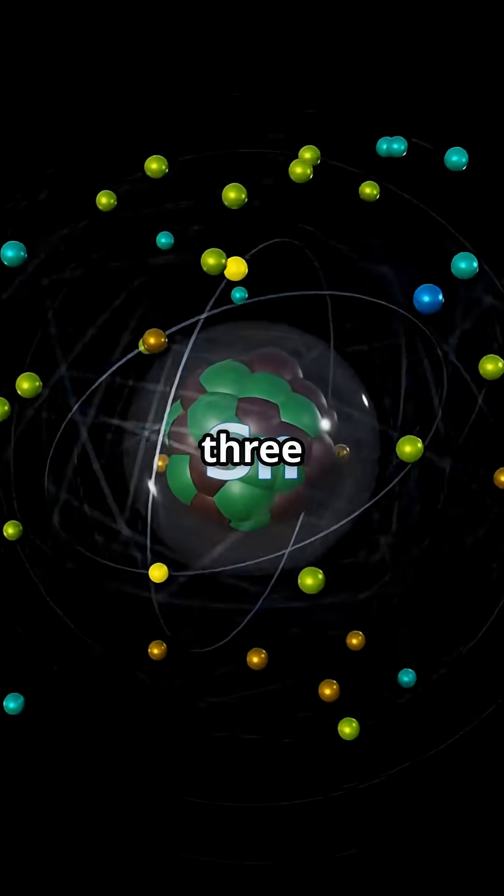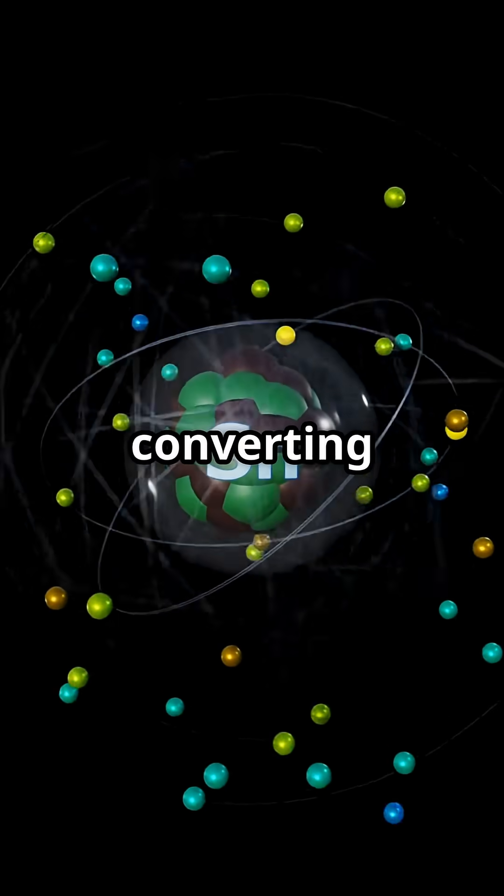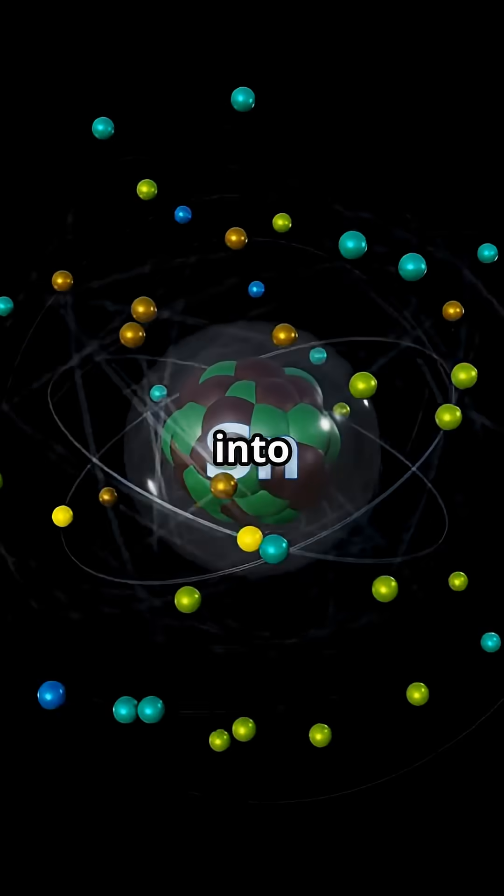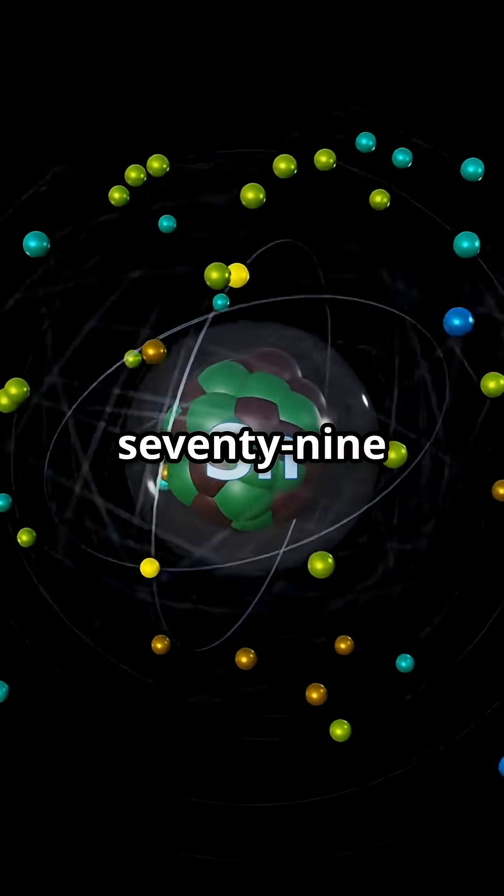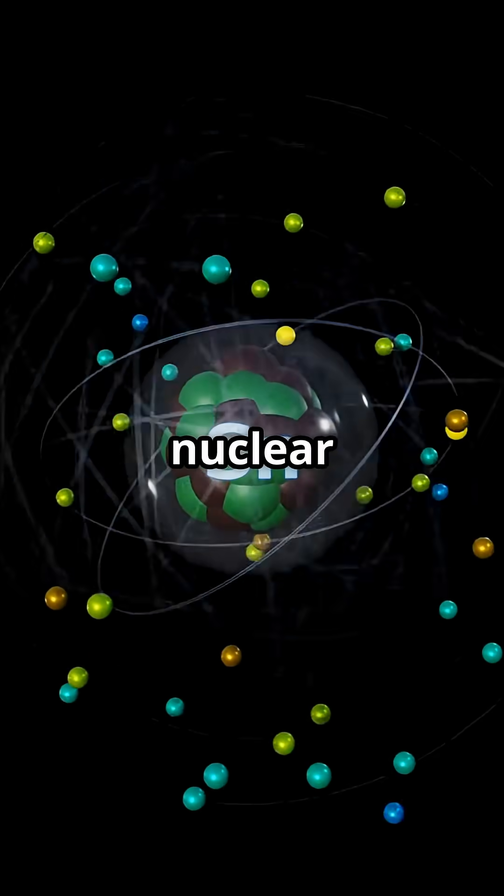In rare cases, precisely three protons were lost, converting lead with 82 protons into gold, which has 79 protons, achieving true nuclear transmutation.